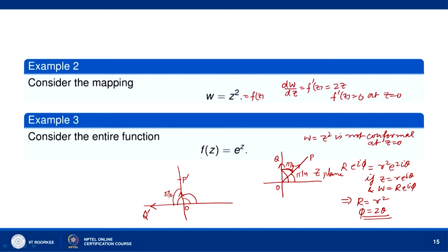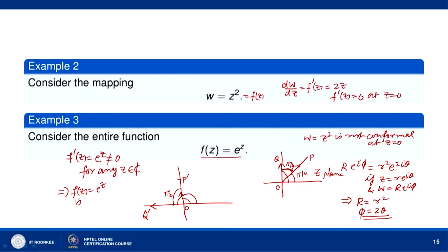For f(z) = e^z, it is an entire function differentiable for all finite z. Its derivative f'(z) = e^z is never zero for any complex number z. Therefore f(z) = e^z is conformal for all z ∈ ℂ.